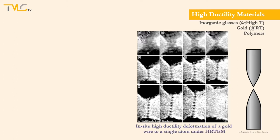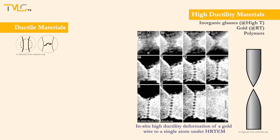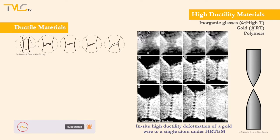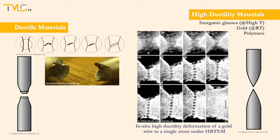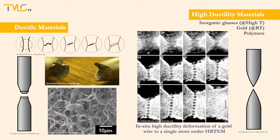Ductile materials in general show necking followed by formation of small cavities within. As deformation goes on, these cavities coalesce into cracks, and those cracks propagate leading to the fracture. This type of fracture is called a cup and cone fracture and shows fibrous features throughout the fracture surface, with the final fracture point showing shear behavior.